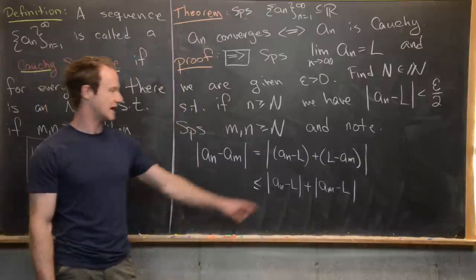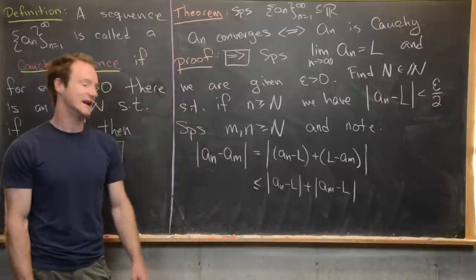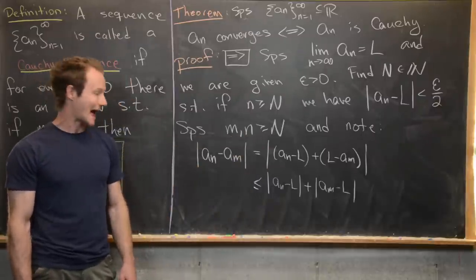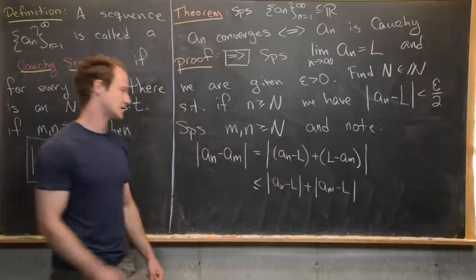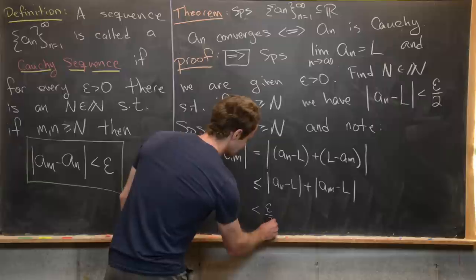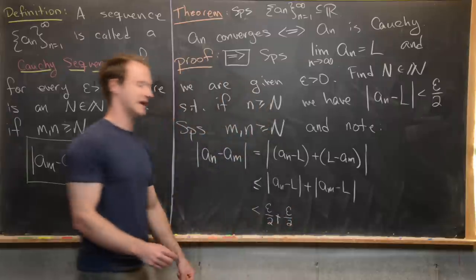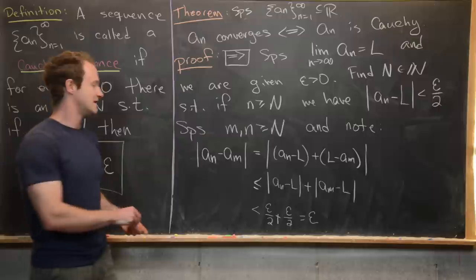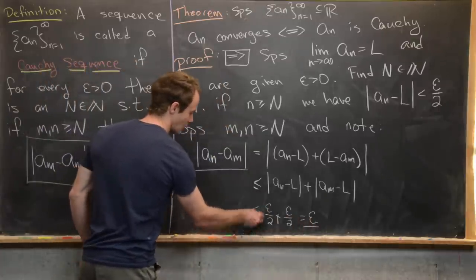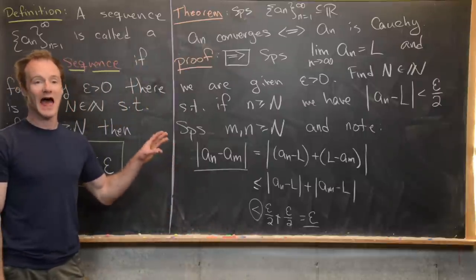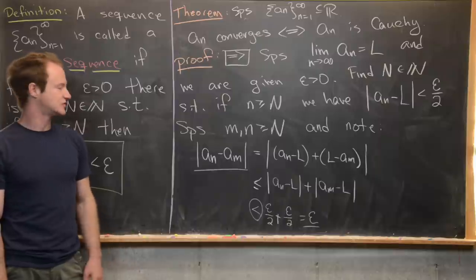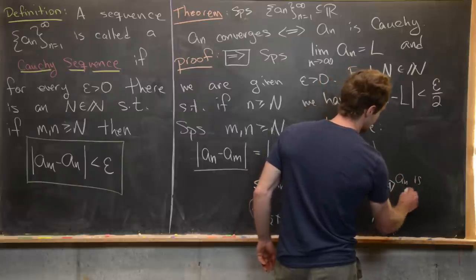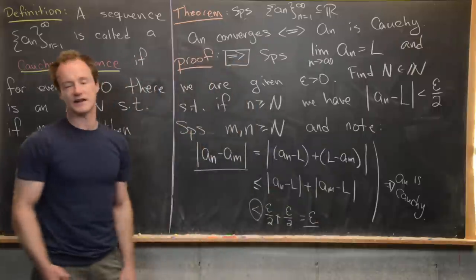I reversed the second term using the fact that it's inside an absolute value. Since m and n are both ≥ N, each term is less than epsilon/2, so we have epsilon/2 + epsilon/2 = epsilon. Looking at the extreme left and right sides of this inequality, we have built the definition for a Cauchy sequence, ending the proof that a_n is Cauchy given that it is convergent.